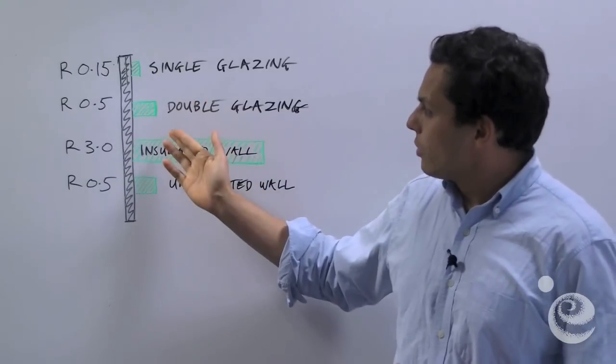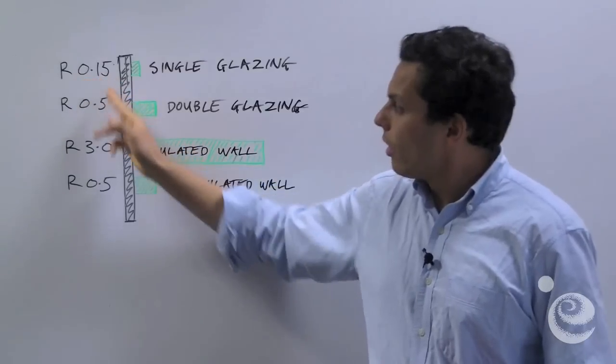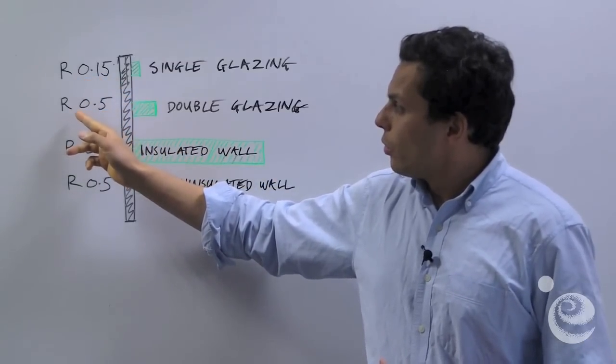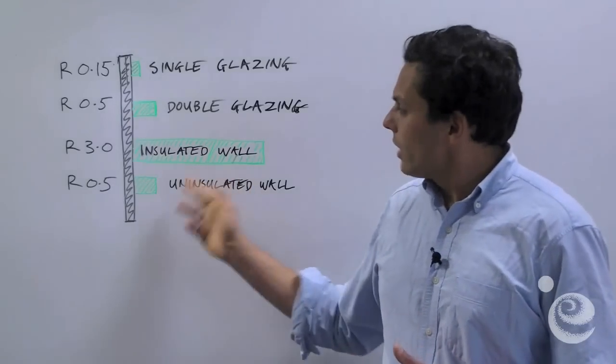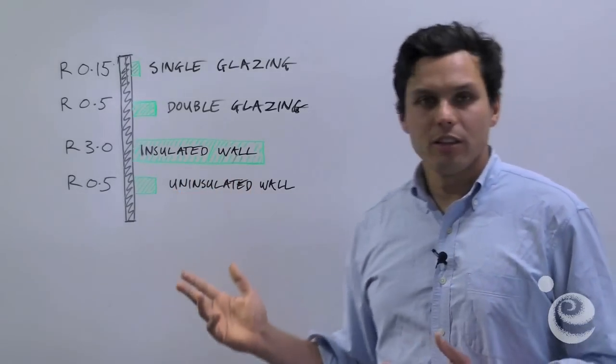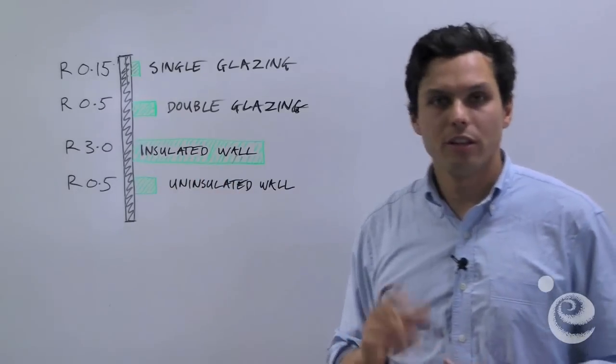Now if you spend a good amount of money, you're going to improve that a lot and get your window to R 0.5 if you put in double glazing. But it's only ever going to perform as well as this uninsulated wall. It's still six times worse than an insulated wall.